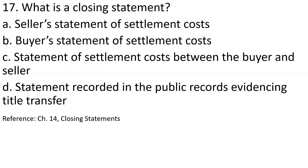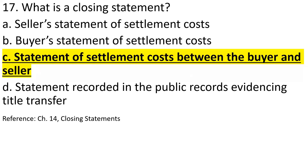Number seventeen: A closing statement — also known as a closing disclosure, or CD — is simply a statement of settlement costs between the buyer and seller. It is a summary of the transaction accounting for all the monies: where they came from and where they went.